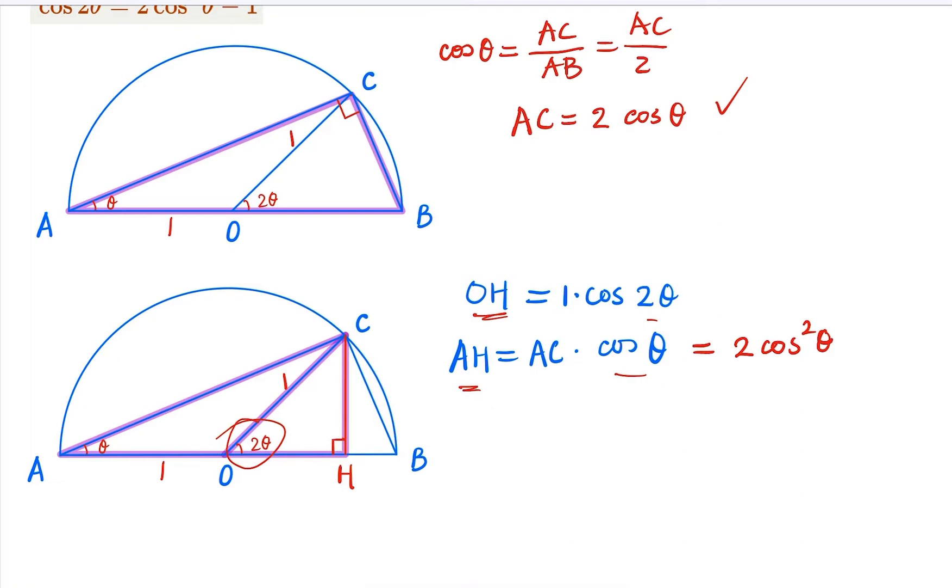However, here from this diagram, you know that AH and OH, the difference is actually AO, which is radius 1. So in other words, AH equals 1 plus OH. What is OH? It is cosine 2θ.